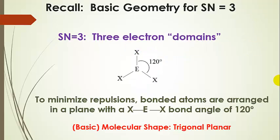Things get more interesting with steric number three. Here's the basic geometry where everything is a bonded atom with no lone pairs. Everything lies in the plane of the screen, and there are three bonded atoms — it looks like a triangle. We call that a trigonal planar molecular shape, and the bond angles are 120 degrees. We discussed this one previously.